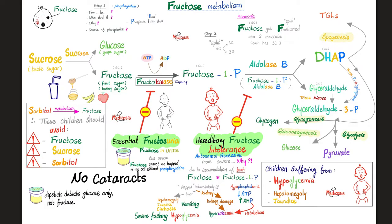To summarize: essential fructosuria shows fructosemia and fructosuria. The classic urine dipstick only detects glucose, not fructose, so more elaborate lab tests are needed. Hereditary fructose intolerance is typically autosomal recessive with aldolase B deficiency. Every time the baby eats honey, fruit, or drinks juice, symptoms occur: hypoglycemia, vomiting, hepatomegaly, and jaundice. Lab results may show hyperuricemia, because elevated AMP levels feed into uric acid formation via purine metabolism.